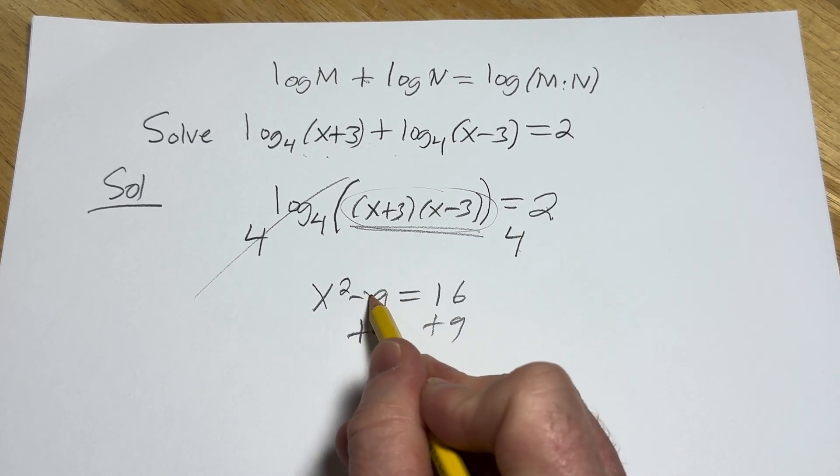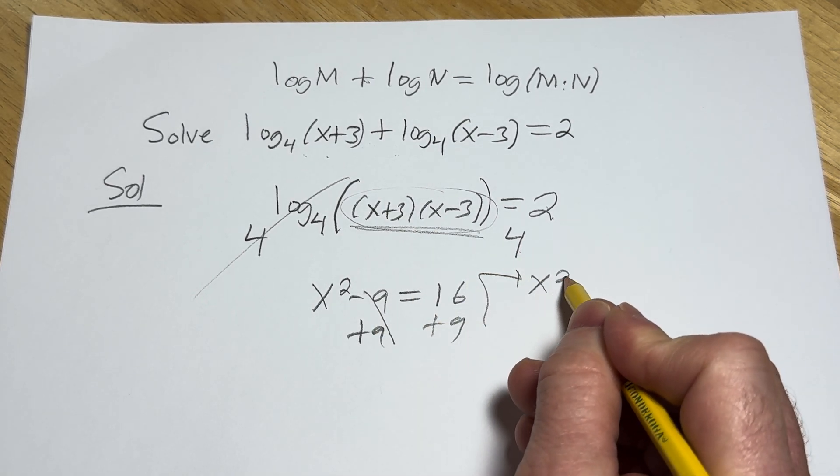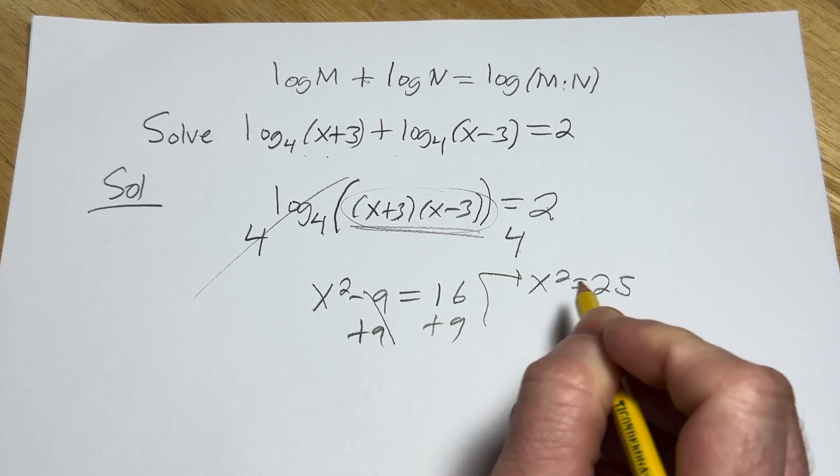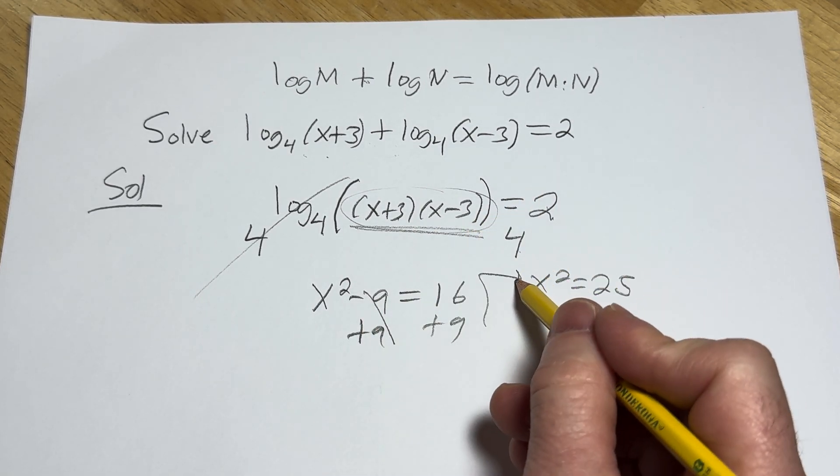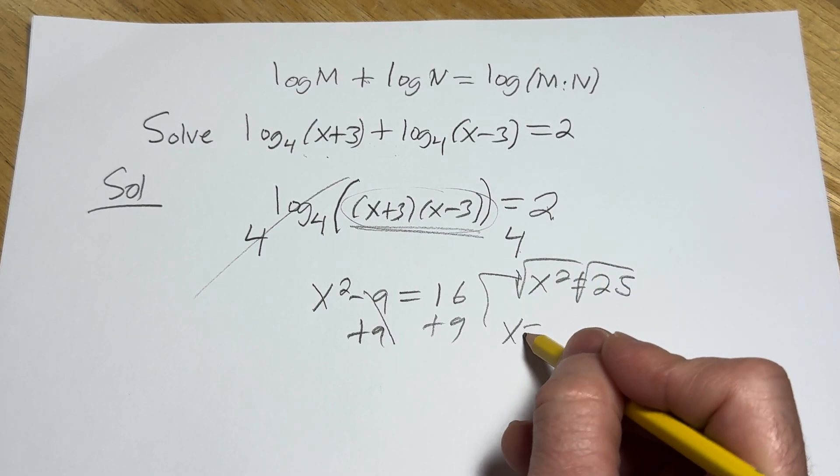If we add the 9 to both sides, we get x squared equals 25. And then when you take the square root, you get x equals plus or minus 5.